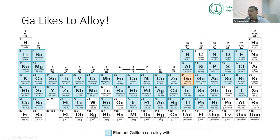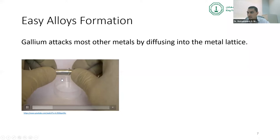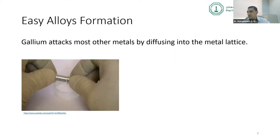The second interesting property is that gallium has a very high tendency to alloy with a lot of metals — all the elements shown in blue in the periodic table form alloys with gallium. What's especially interesting is that this alloying happens very easily at ambient conditions. Here in this video, we see gallium and indium, and by just rubbing them together, a few drops of liquid metal alloy are formed at room temperature under very simple conditions.